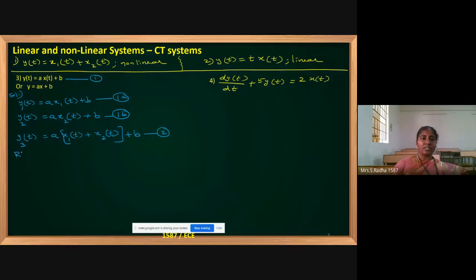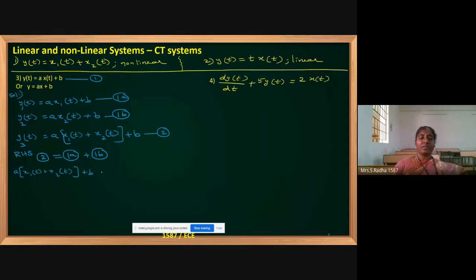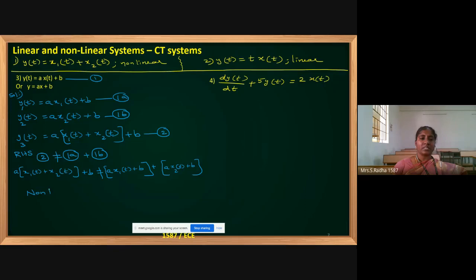Now check only the RHS — whether the RHS of equation 2 equals the RHS of equation 1a plus 1b. Equation 2 has a into x1 of t plus x2 of t, plus b. Equation 1a has a into x1 of t plus b; equation 1b has a into x2 of t plus b. If you add 1a and 1b, there is an extra b on the right side, so the two sides are not equal. Therefore, the system is a non-linear system.